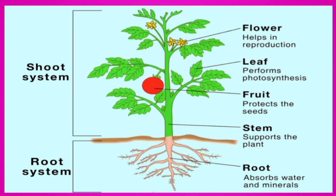Flower helps in reproduction. Leaf performs photosynthesis. Fruit protects the seeds. Stem supports the plant. And root absorbs water and minerals. These are all the parts of a plant.